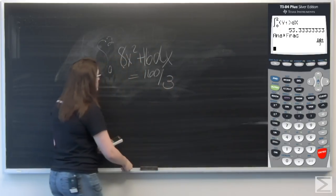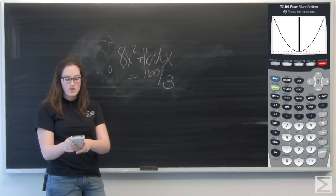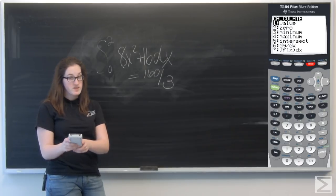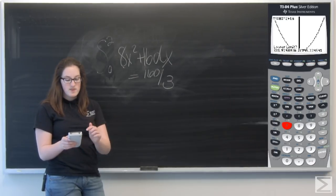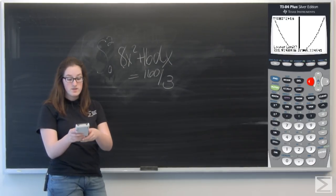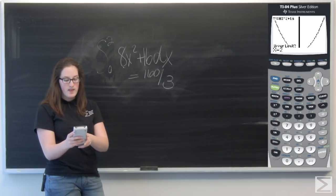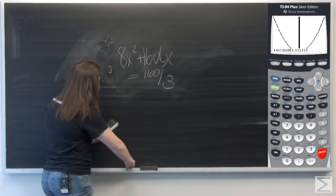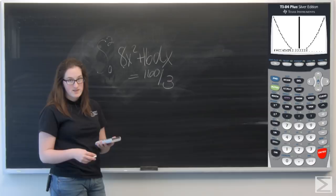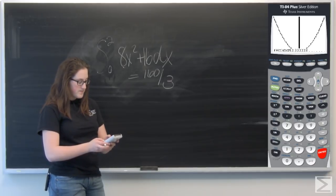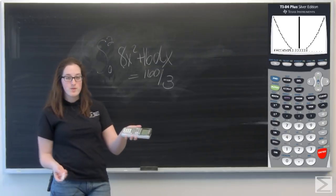And I can also do this on the graph of my function. So go back to your graph. Second calc. This time scroll down to number seven. You're going to see integral f of x dx. So select that. Lower limit. You can hit zero. Enter. Upper limit. Two. And then I get the same thing. 53.3 repeating. Which I know is 160 over three. So I hope these will help you use your calculator a little bit more effectively.